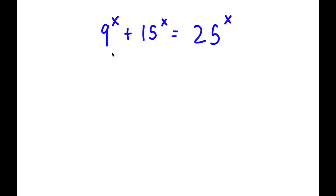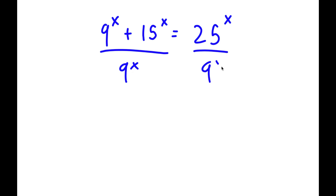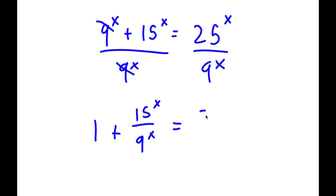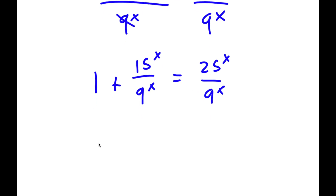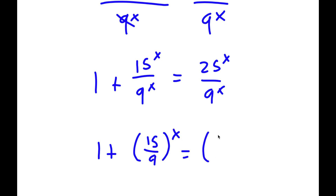In this problem, I have 9 to the power of x plus 15 to the power of x equals 25 to the power of x. The first thing I'm going to do is divide both sides by 9 to the power of x. So now I have 1 plus 15 to the power of x over 9 to the power of x equals 25 to the power of x over 9 to the power of x, which is the same as 1 plus (15 over 9) to the power of x equals (25 over 9) to the power of x.